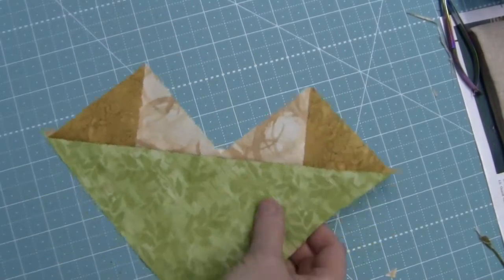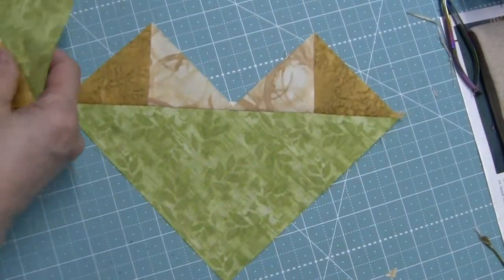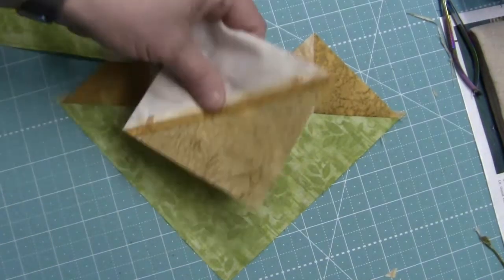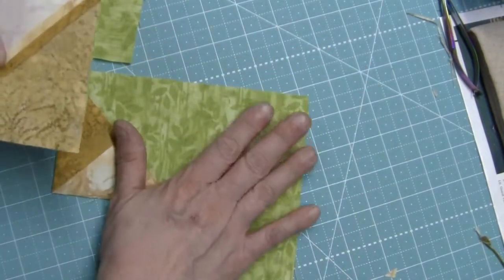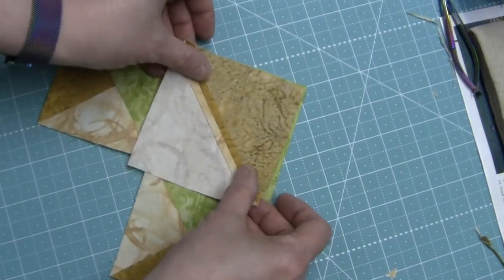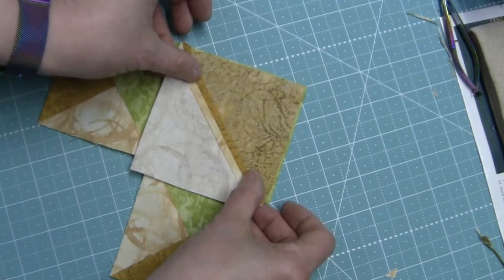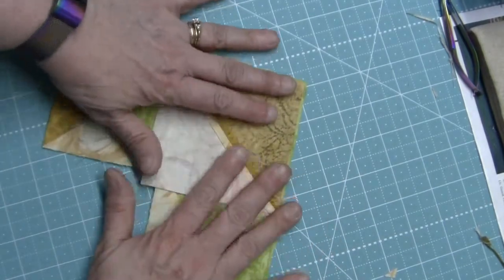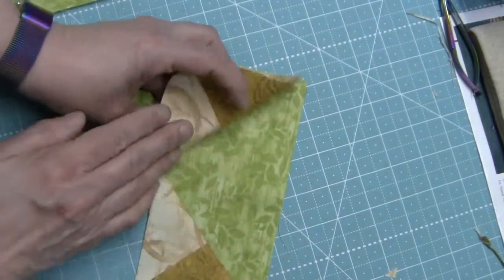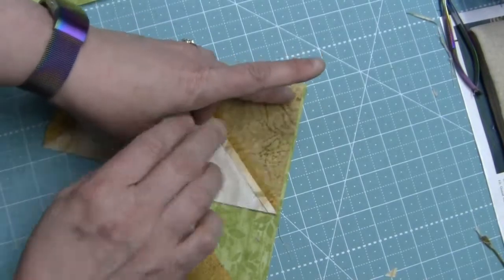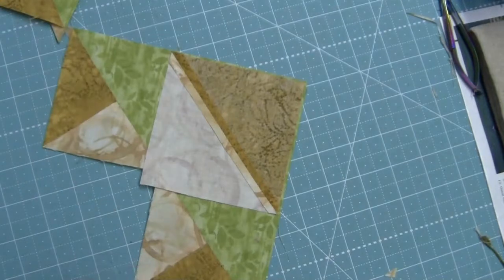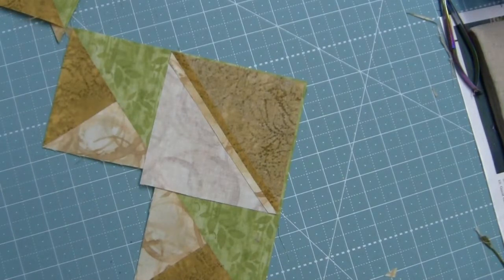We end up with two pieces that look like this, and if you remember from when we made flying geese before we're going to continue to do the same thing again by placing a square on what's left of the large square and again draw lines so that we can sew two seams here. That's going to give us two of the flying geese that we need and then with the other piece we'll make the other two.